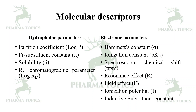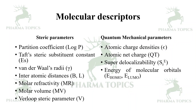Molecular descriptor categories include: hydrophobic parameters such as partition coefficient (π substituent), solubility, and chromatographic parameters; electronic parameters such as Hammett constant, resonance effect, field effect, and inductive substituent constant; steric parameters such as Taft's steric substituent constant, van der Waals radii, molar refractivity, and Verloop steric parameters; and quantum mechanical parameters such as atomic charge densities, atomic net charge, superdelocalizability, E-HOMO, and E-LUMO (energy levels of molecular orbitals).